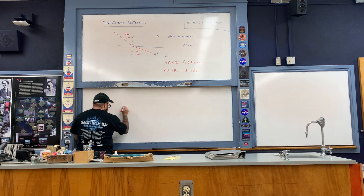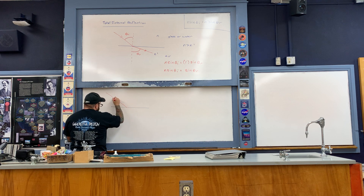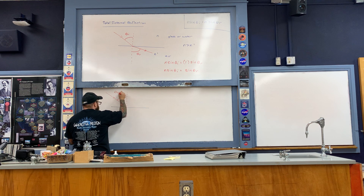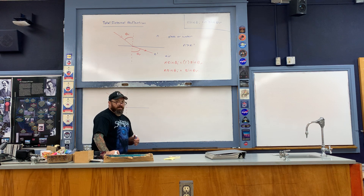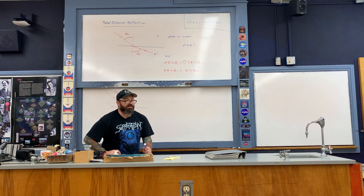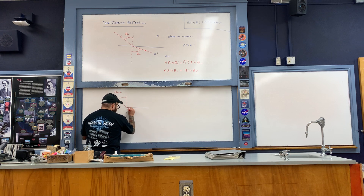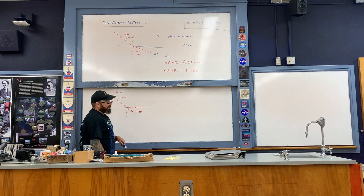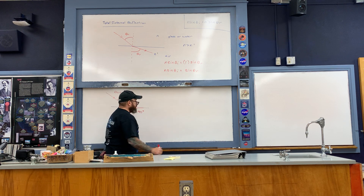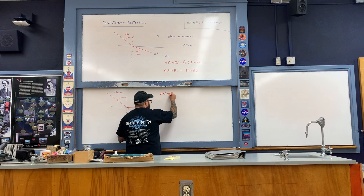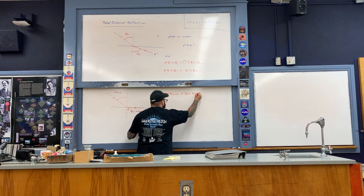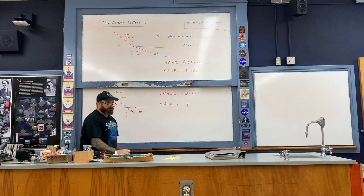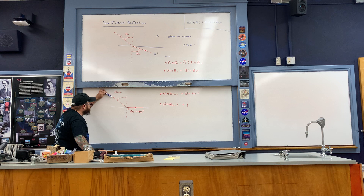Here is the boundary, and here is the incoming light ray. This specific angle is referred to as the critical angle — written as theta-crit — which is the angle of incidence required so that the refracted angle is 90 degrees. Here is the refracted light ray, and the refracted angle equals 90 degrees. Snell's law for this situation is: N times sine of the critical angle equals sine of 90 degrees, and sine of 90 degrees equals 1.